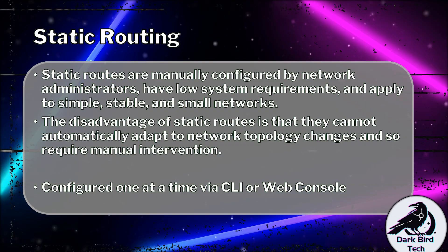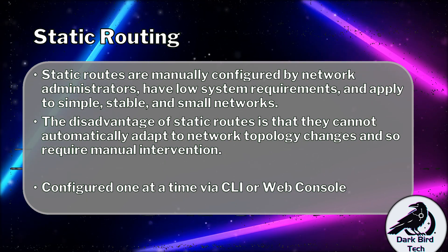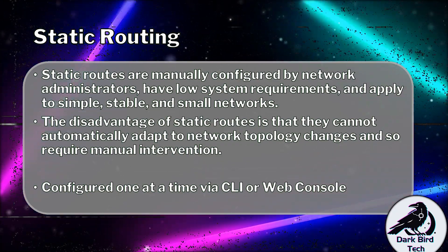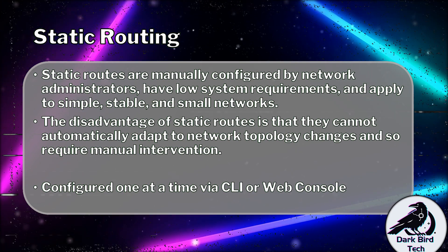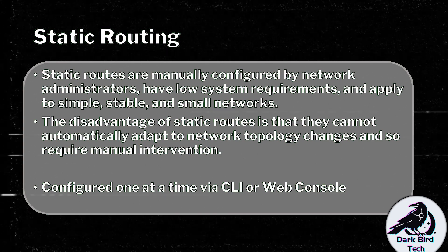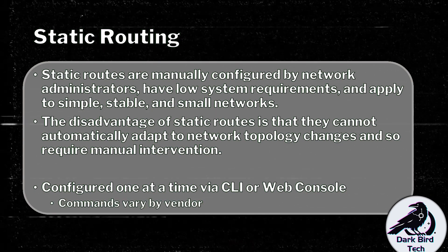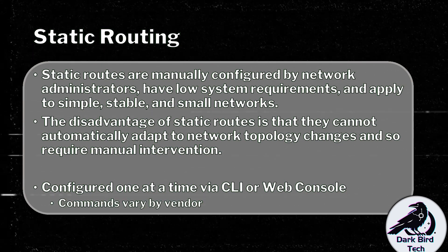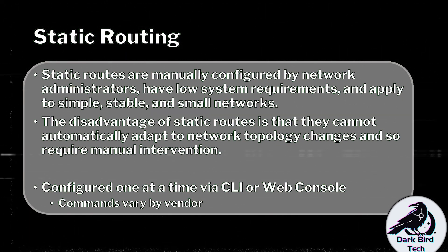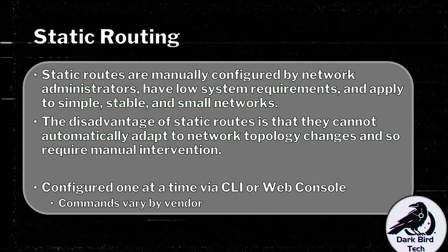You are doing it one at a time, either through the command line or a web console. It often boils down to one command per destination on every router. So if I've got 30 networks to route to, I'll have to run 30 static routing commands on each and every one of my routers — the workload adds up. That's why we normally encourage static routing for simple, stable, or small networks — preferably all three. The commands vary by vendor, but generally three key things need to be specified: the destination network address and subnet mask, the exit interface, and the next hop IP address — the same three key things that need to be in a routing table entry.